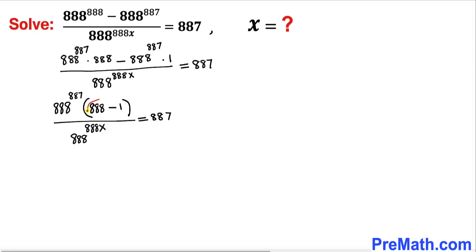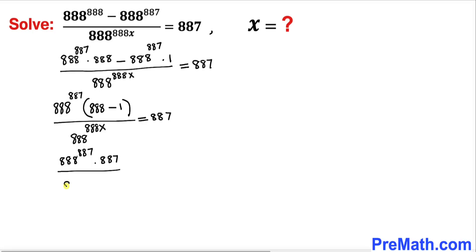Inside the parenthesis, 888 minus 1 gives us 887. So this equation can be written as 888^887 times 887, divided by 888^888 times x, equals to 887 on the right-hand side.